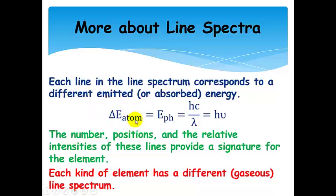This change in energy can be positive or negative, but it's always exactly equal to, aside from sign, the energy of the photon absorbed or emitted. We can relate the energy of the photon to either its wavelength or its frequency. The numbers, positions, and relative intensities of the lines are a signature for each individual element, and each kind of element has a different line spectrum.